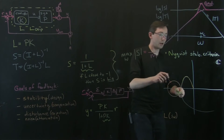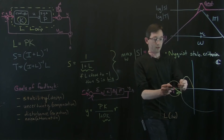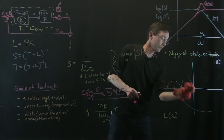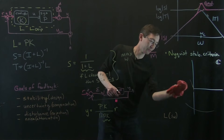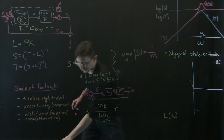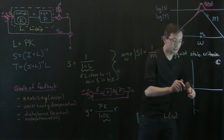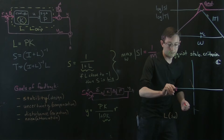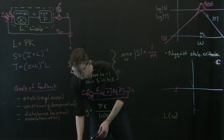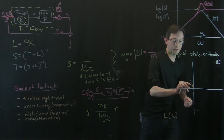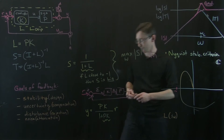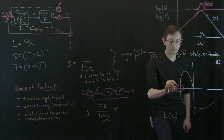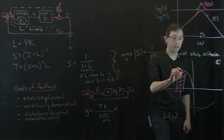Oftentimes people will draw this as a kind of cone of uncertainty around the loop transfer function — the range of uncertainty we can live with before the system goes unstable. So let me redraw this: here is my negative one point, and I'm going to draw the transfer function a little closer.